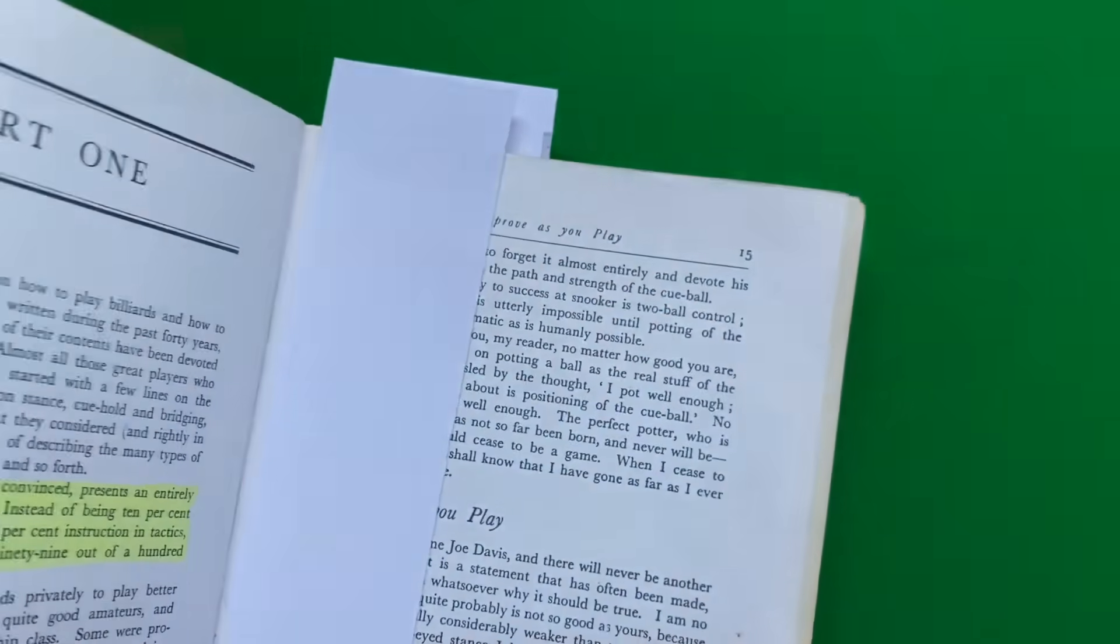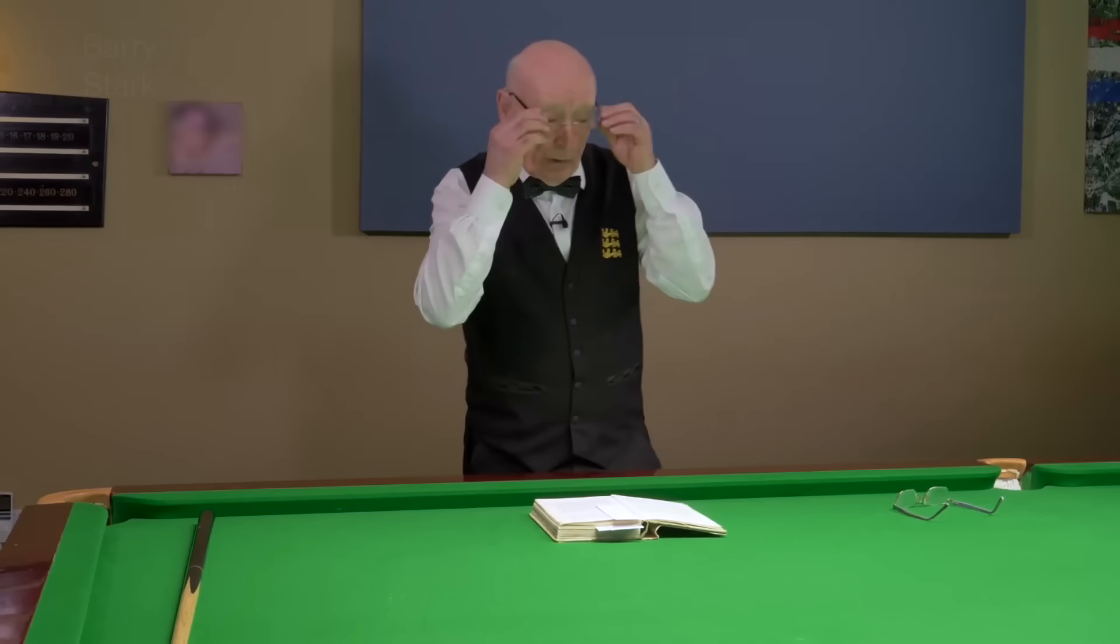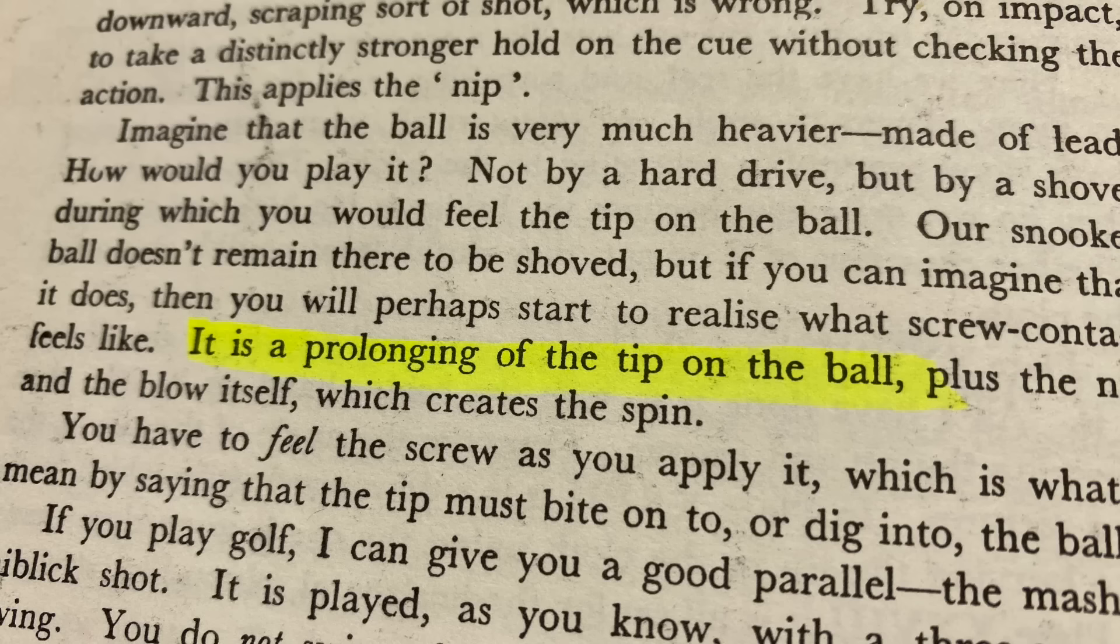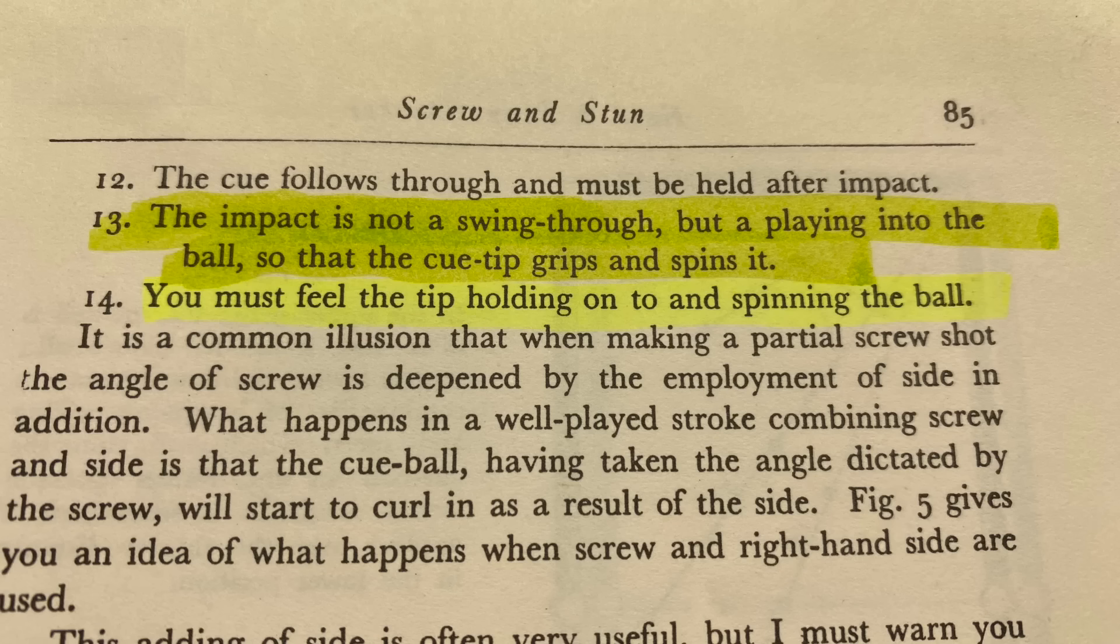Joe Davis, 20 years world champion. And everybody relates to this book as the Bible on snooker. It is a prolonging of the tip on the ball. The drag is caused by the tip holding on to the ball. You feel the tip holding on to and spinning the ball.